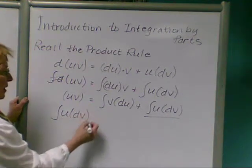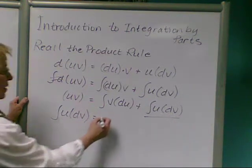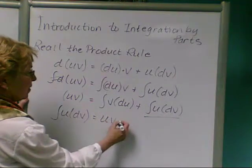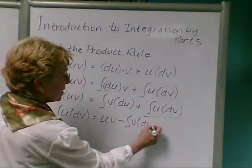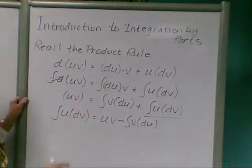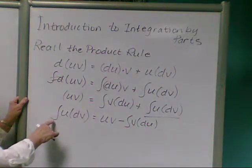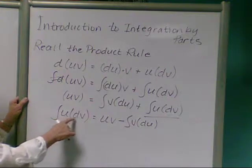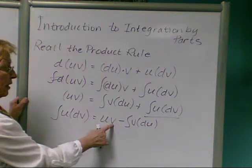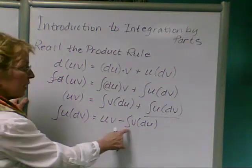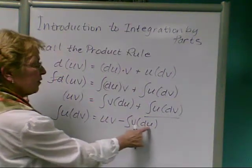And we will have a resulting arrangement that looks like this. We say that the integral of u times the derivative of v is equal to u times v minus the integral of v times the derivative of u.